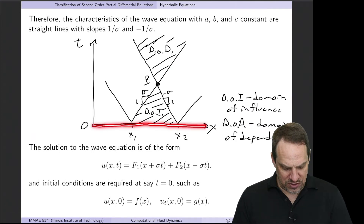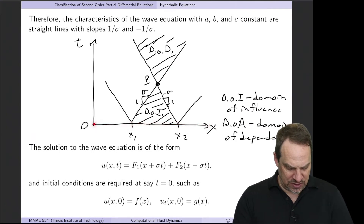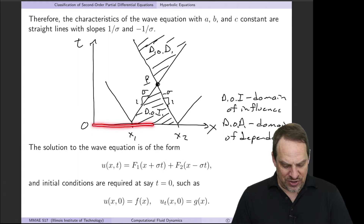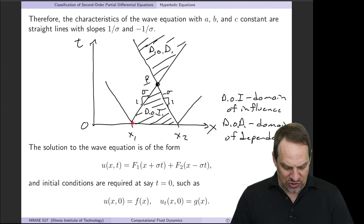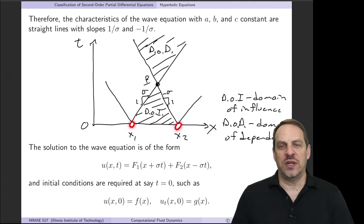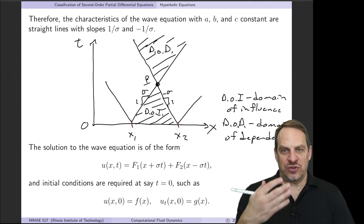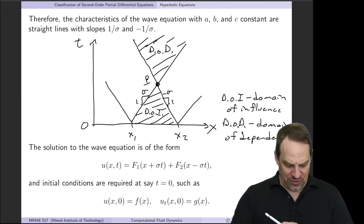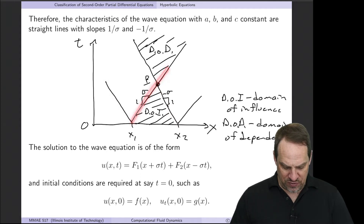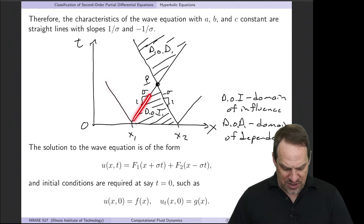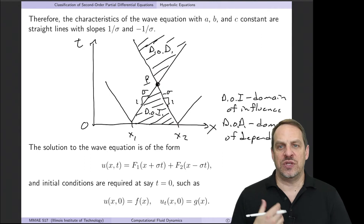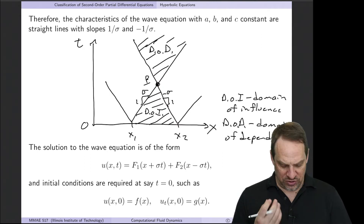Here's what it looks like: x is on the horizontal axis and t goes upward. We start at initial time t = 0 with some amplitude u. If we introduce disturbances at two points x₁ and x₂, those disturbances generate a left-moving wave and a right-moving wave from each disturbance. Because a, b, c are constants, these left- and right-moving waves are straight lines.